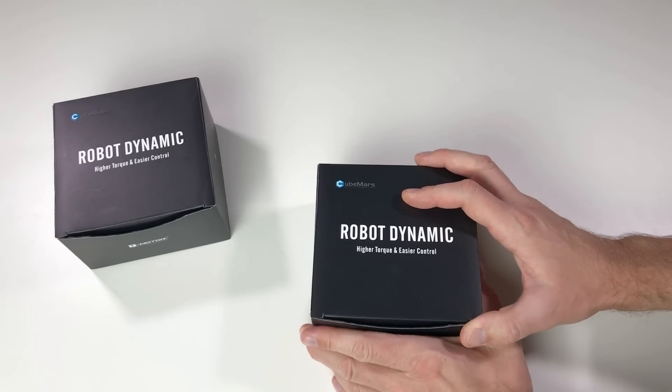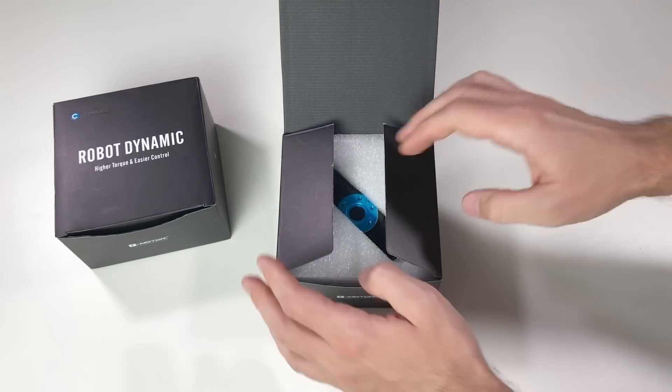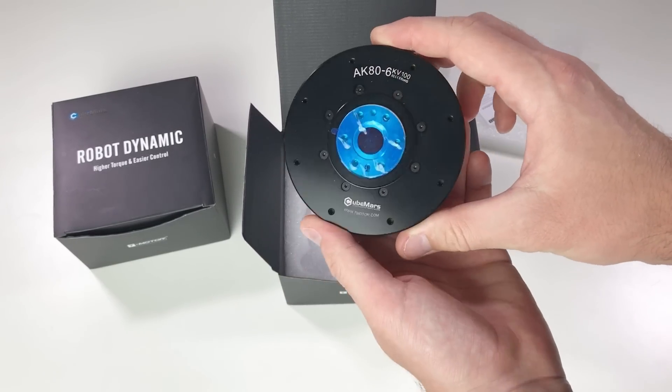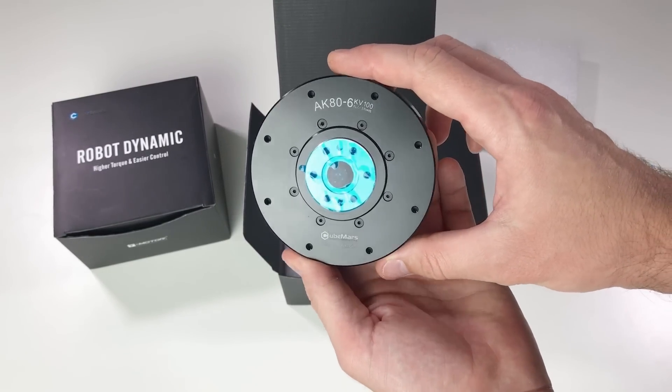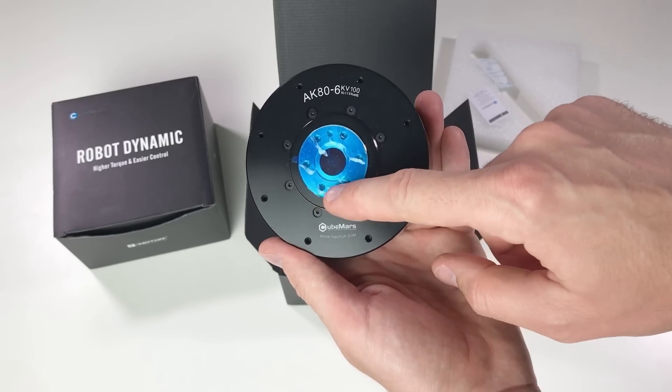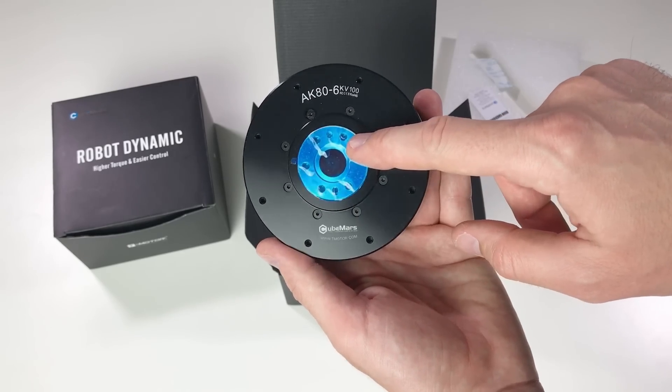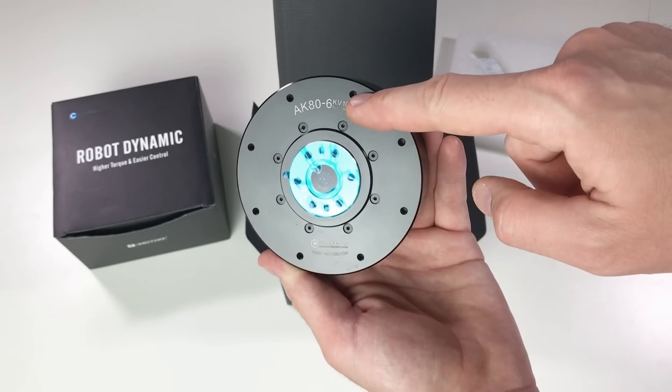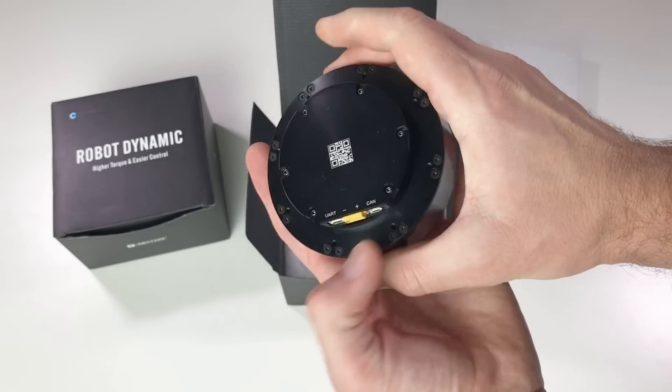And now the unboxing time. And our beautiful actuator. Look at this beauty! The output shaft has 6 holes for M4 screws. You can mount the actuator either from the front, there are 8 holes for M3 screws, or from the back.